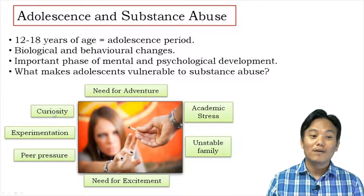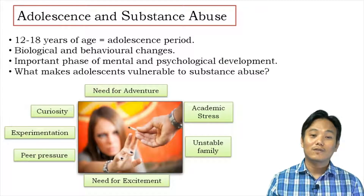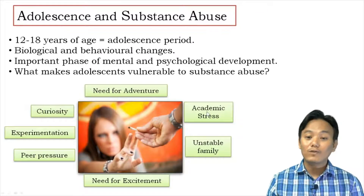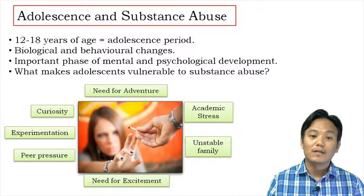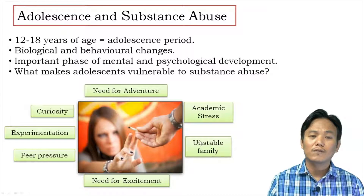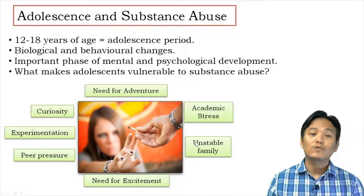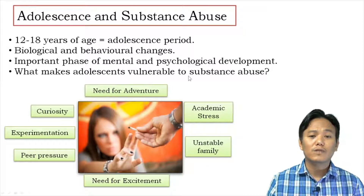Apart from curiosity, peer pressure is also a major factor. If a teenager gets into the wrong company where friends are into substance abuse, that teenager is at risk of falling into it as well. Academic stress and unstable family situations are additional factors — intense competition and pressure from parents and teachers can push adolescents toward substance abuse to relieve stress. Financial problems or parental conflict at home can also push teenagers toward substance abuse.